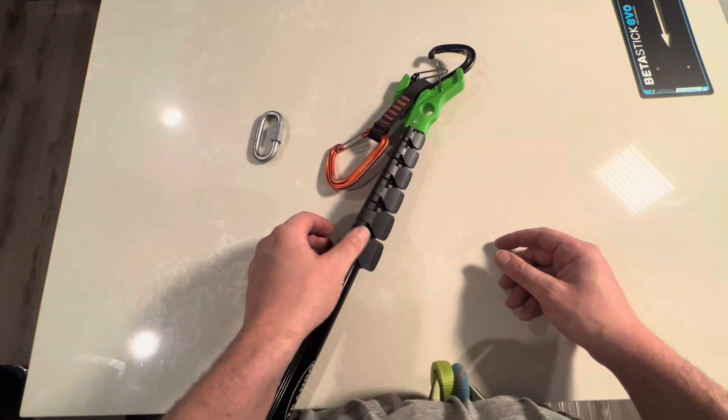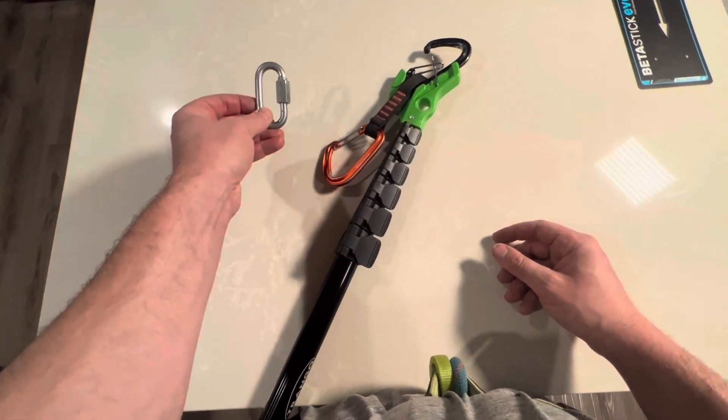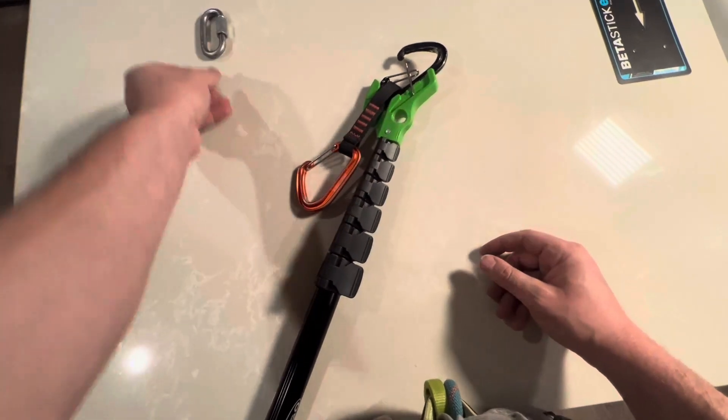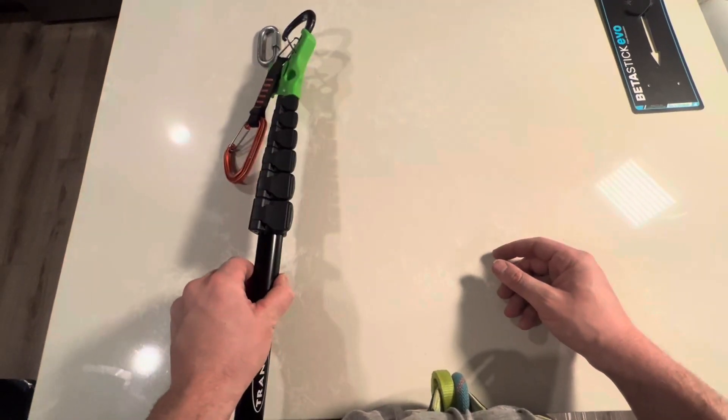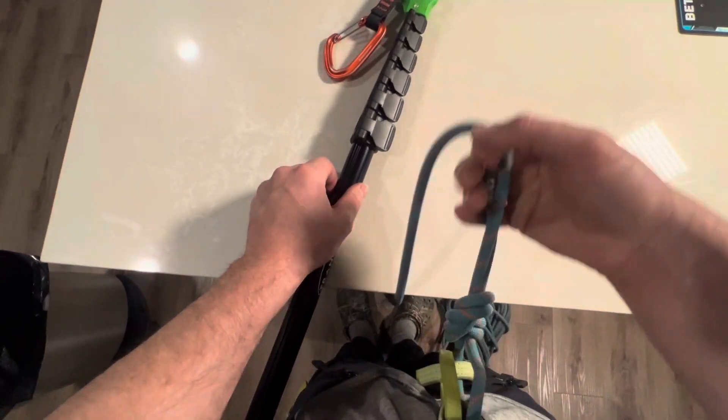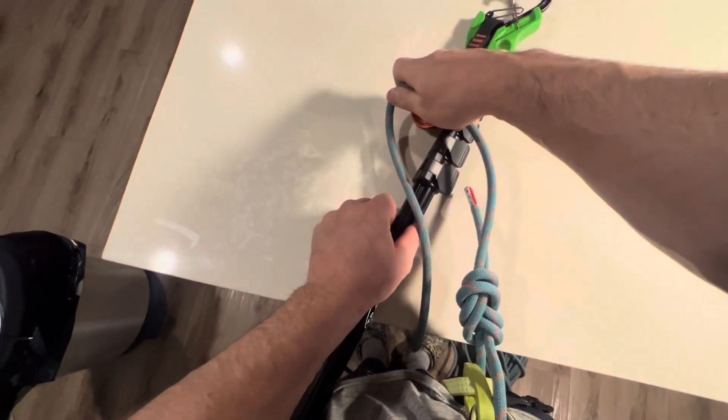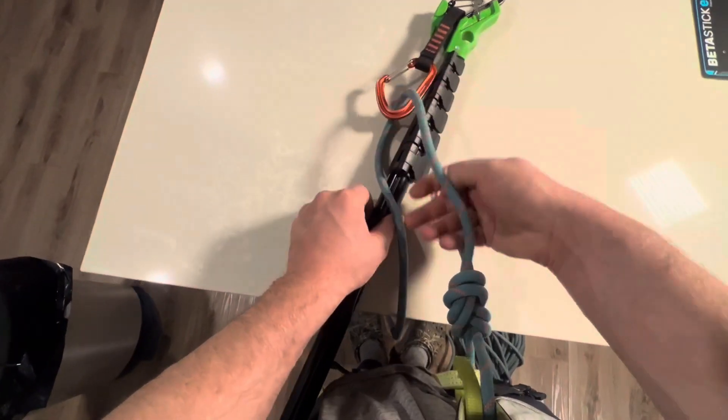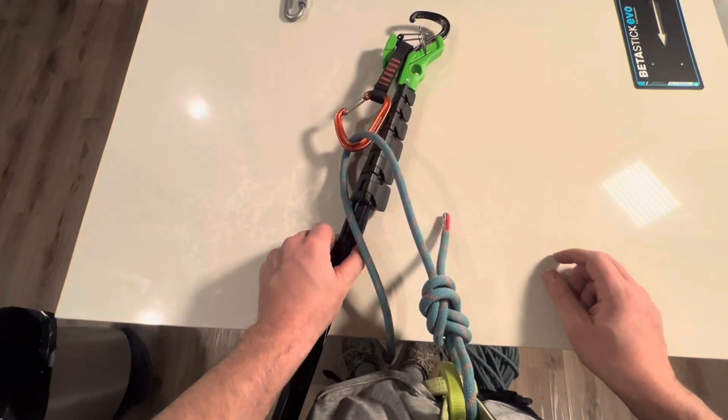Now this is where you do have to have a little bit of planning and foresight. If you know that the bolt is going to be up and off to the left and you're going to clip it like this, well you just want to make sure that how you put the rope into the other end of the quickdraw is not back clipped. So just a little bit of planning there.